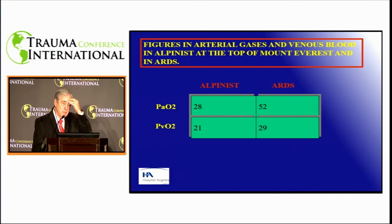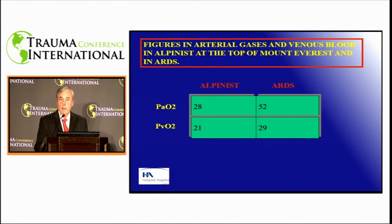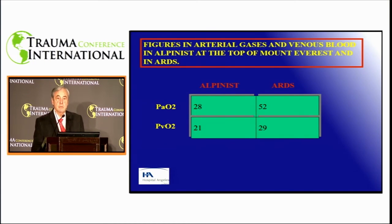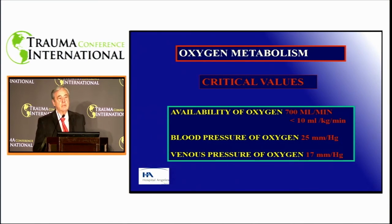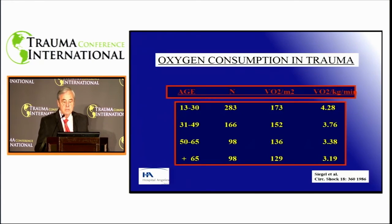How can we explain how our body adapts so well to hypoxia that a mountain climber at the top of Everest has arterial values and venous pressure of 21, while a patient with acute respiratory distress in intensive therapy has values of 52 and 29 in venous blood? The critical values for availability are 700 milliliters per minute, with a PO2 arterial of 25—as we've seen at Everest you can be at 28—and venous oxygen pressure in the vena cava or pulmonary artery of 17.